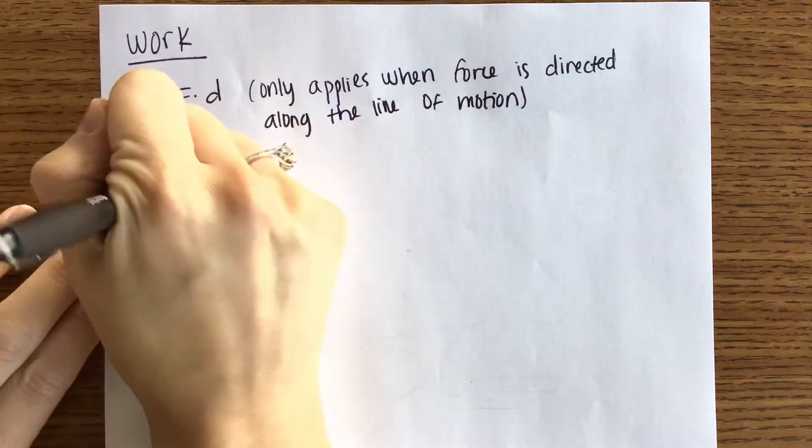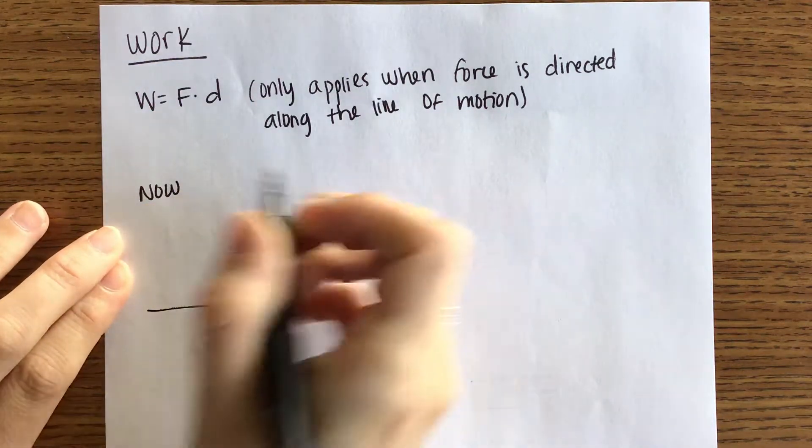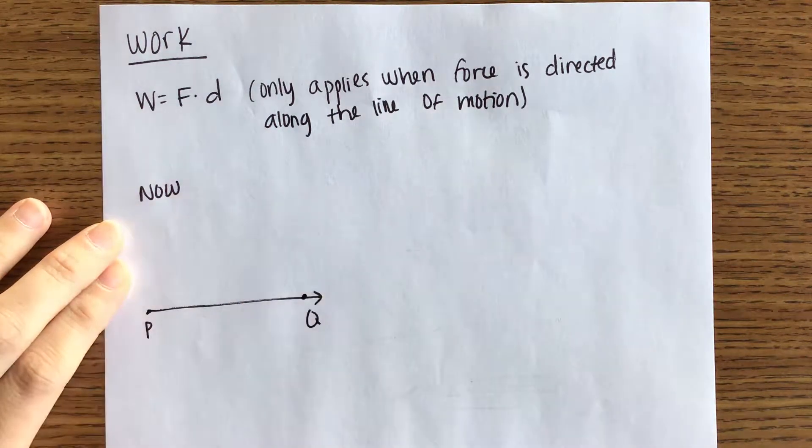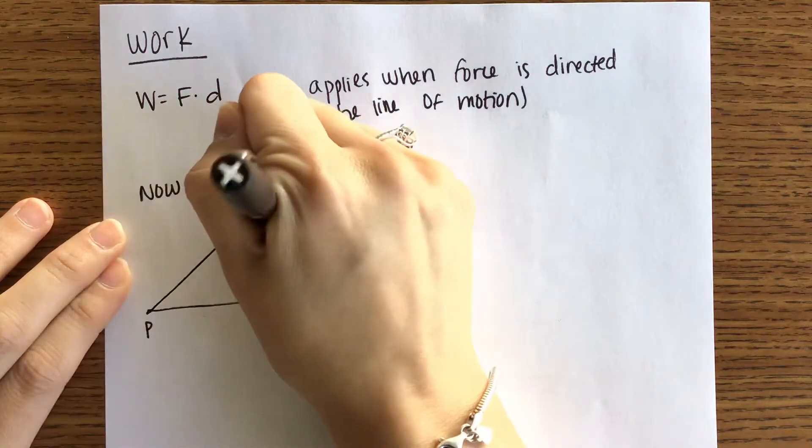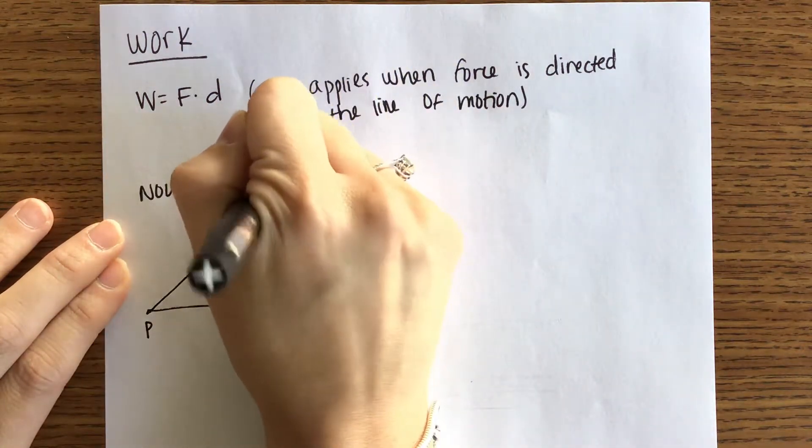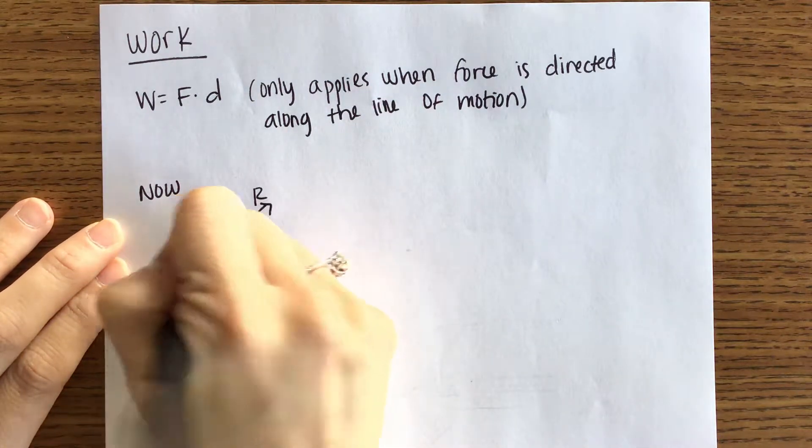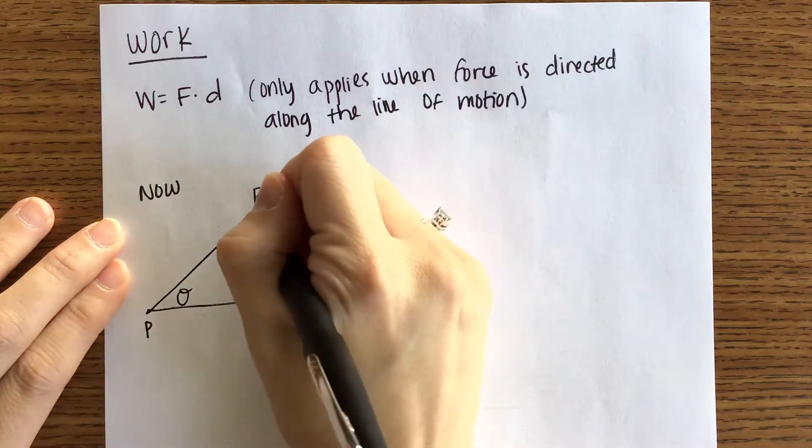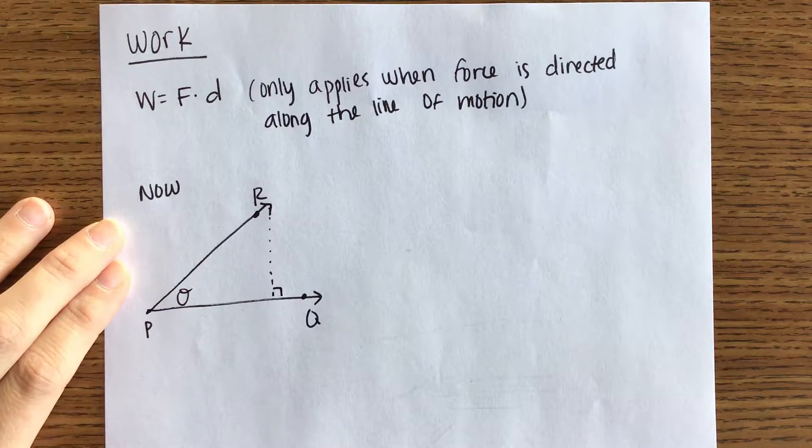Here's what we're doing now. You have this vector P and it's heading towards Q. And then you have some force. And then you have this angle theta. Let's drop an altitude here.